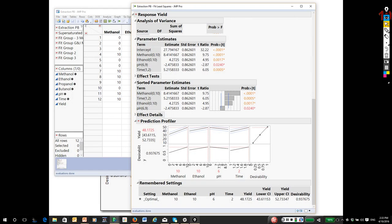So basically what it's saying, if we run at 10, I've forgotten what the, I think this is milligrams per liter, ethanol and methanol, pH of 6, so they want a lower pH, and a time of 2 hours, it's estimating on average you'll get 48 milligrams per liter.